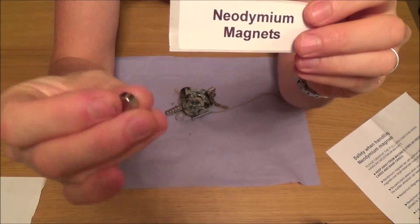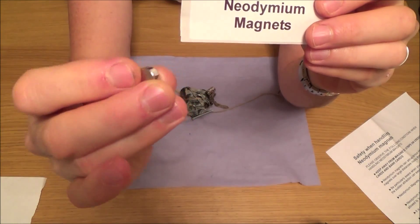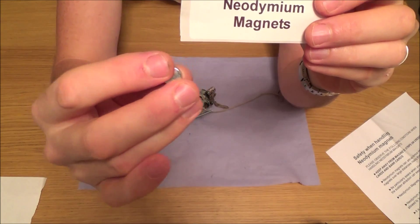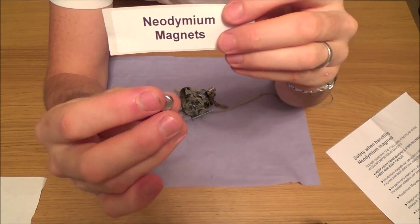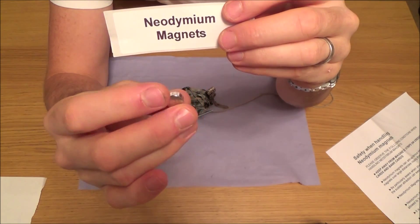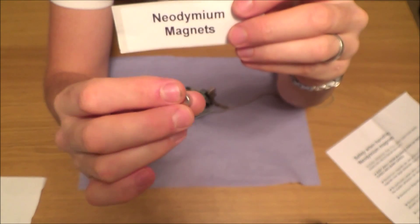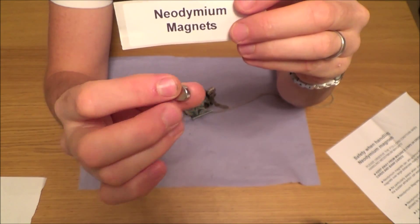You can get these little ones here. These are just little cylinder ones, 10 millimeters by 5 millimeters. You get a pack of 10 for around five pounds, and obviously the bigger the magnet the more expensive they are, but they're so powerful.